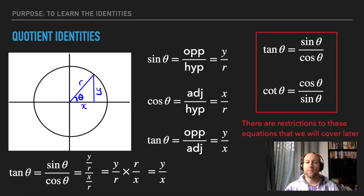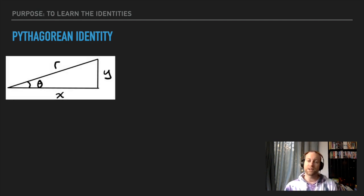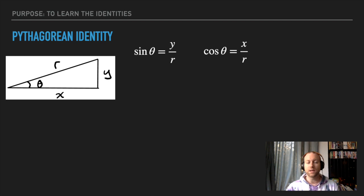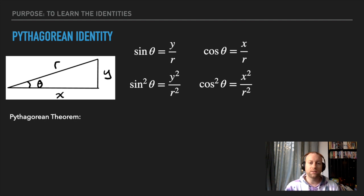There are some restrictions to these equations, but we'll get to those later with non-permissible values. Last one here is the Pythagorean identity, which is based on the Pythagorean theorem. Here's a typical triangle on a circle — the hypotenuse is the radius. Since we're dealing with theta, it makes sense to work with radius in a circle. Here are your expressions for sine theta and cosine theta, and if I square both sides of each, I get these equations — I need those to get to the Pythagorean theorem.